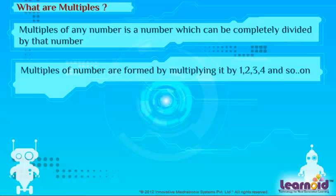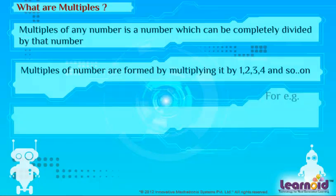Multiples of a number are found by multiplying it by 1, 2, 3, 4 and so on. For example,